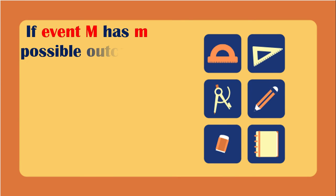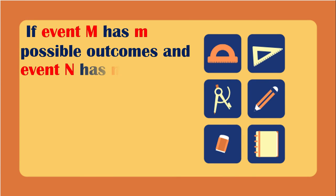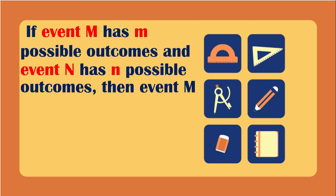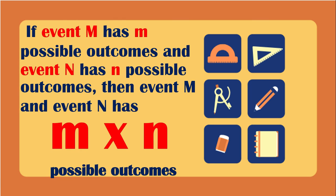The Fundamental Counting Principle states: if event M has m possible outcomes and event N has n possible outcomes, then event M and N together has m times n possible outcomes. We simply multiply the possible outcomes of each event to get the total number of possible outcomes.